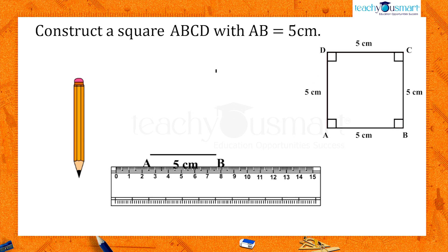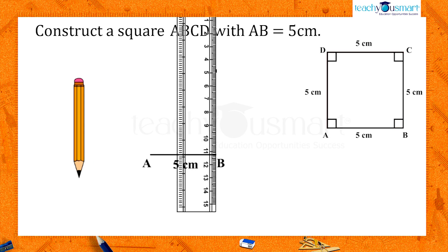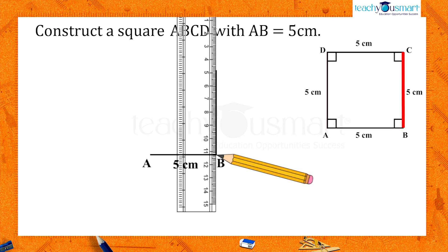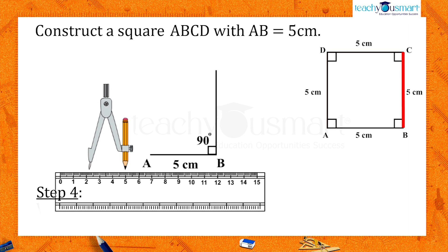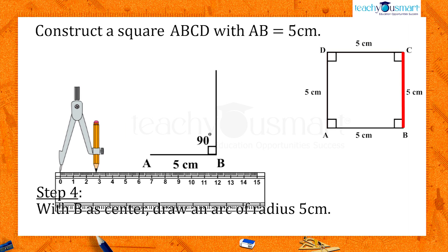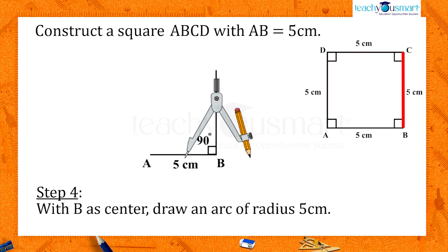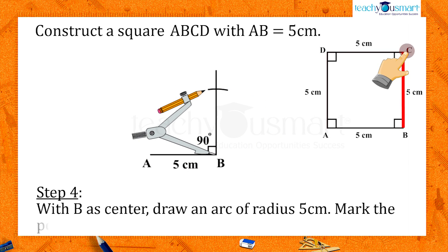From the rough sketch, we can see that C is on this line and at a distance of five centimeters away from B. So using the compass with B as center, draw an arc of radius five centimeters to cut this arm to locate C.